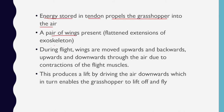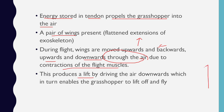During flight, there is a pair of wings that play a role as flattened extensions of the exoskeleton. These wings move upwards and downwards through the air due to contractions of the flight muscles. This produces a lift, driving the air downwards, which in turn enables the grasshopper to lift off and fly.